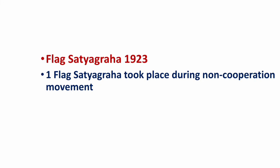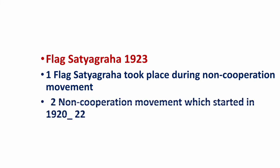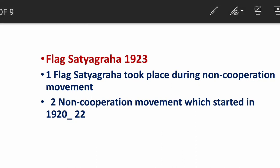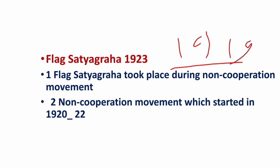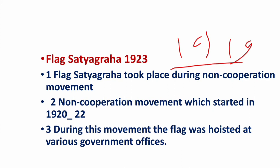The Flag Satyagraha started in 1923, during the Non-Cooperation Movement, which is a very important movement in Indian independence history. The Non-Cooperation Movement ran from 1920 to 1922. The Khilafat Movement is also considered part of the Non-Cooperation Movement — both movements were eventually merged. During the Flag Satyagraha, the flag was hoisted at various government offices, in protest against British officers who were insulting the Indian flag by respecting only the British Empire's flag.